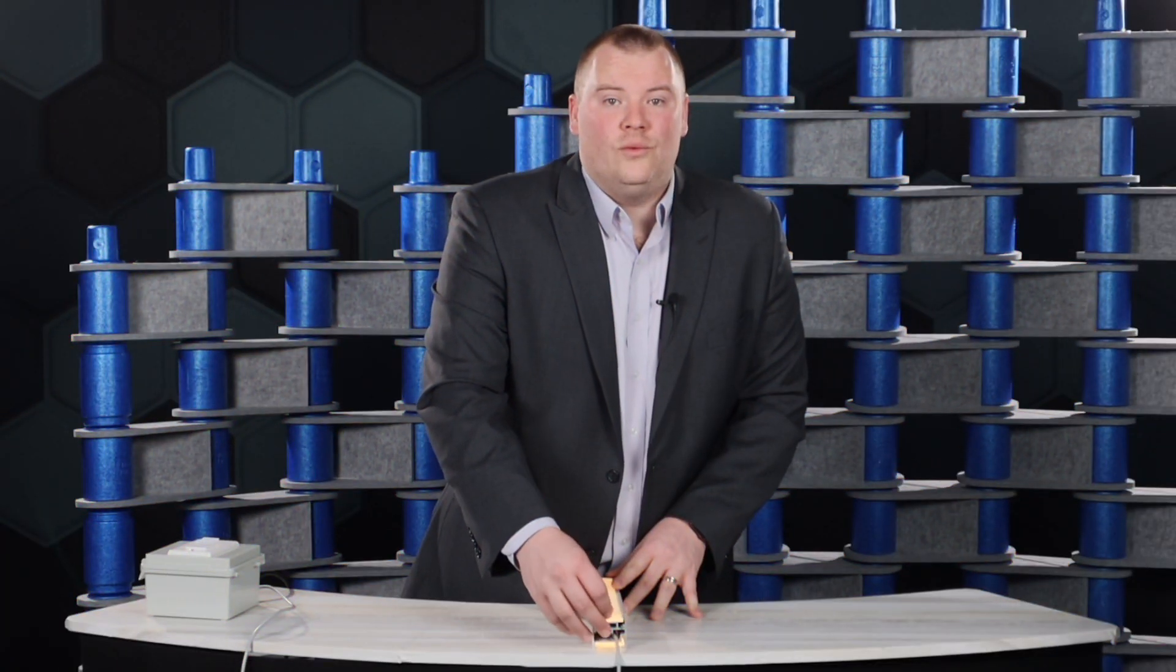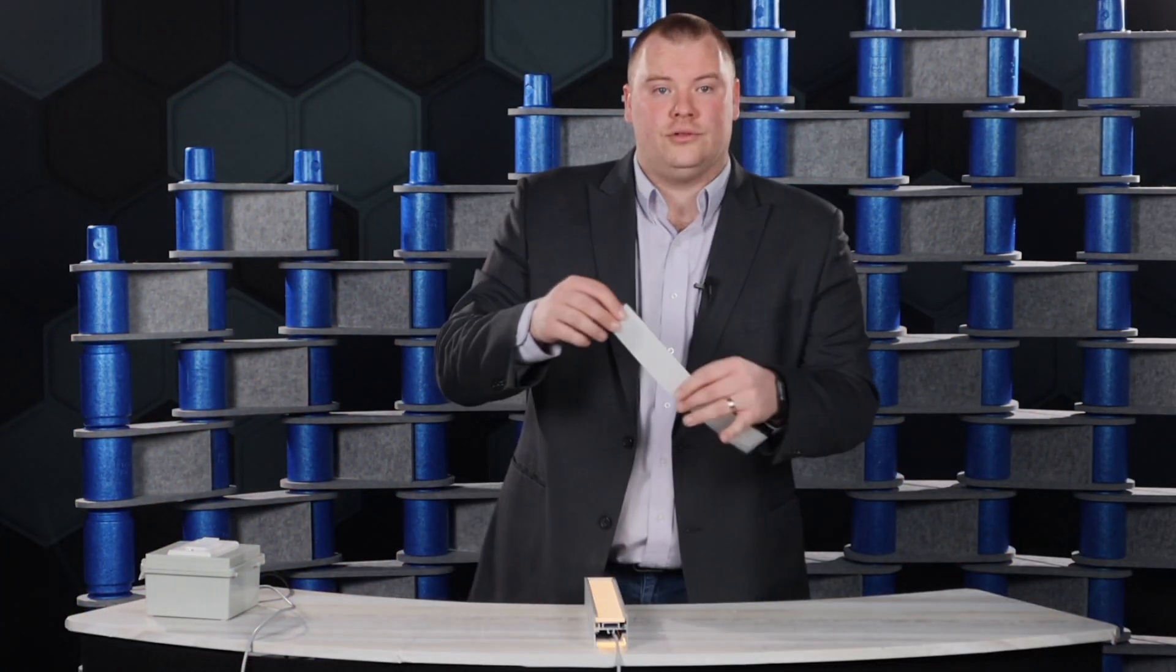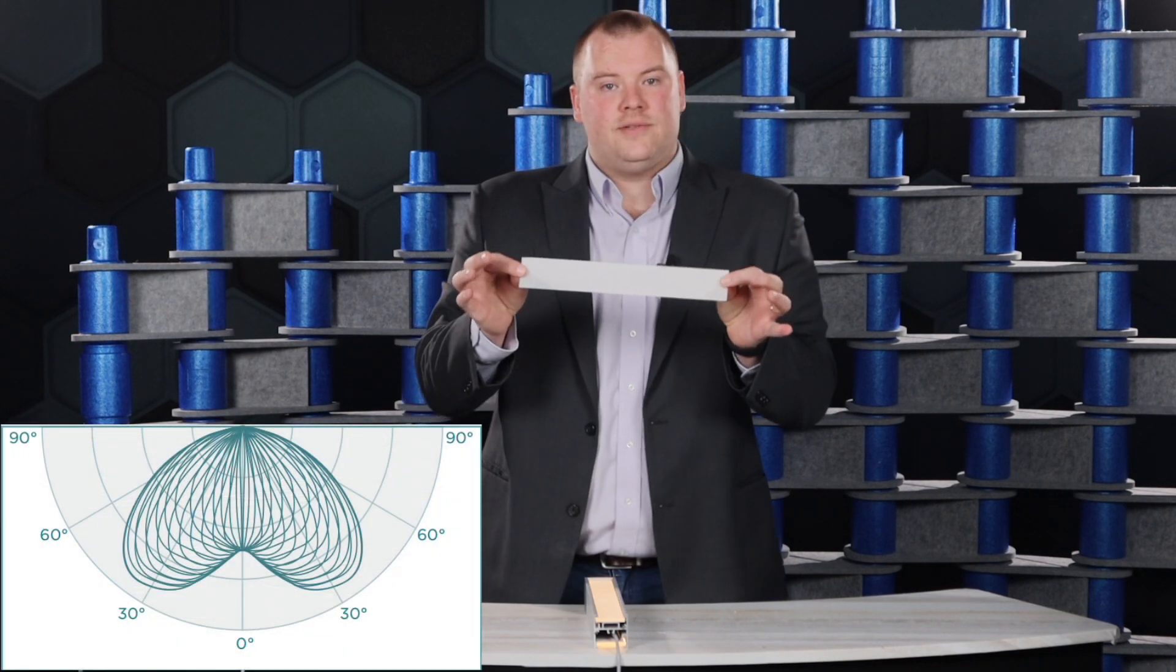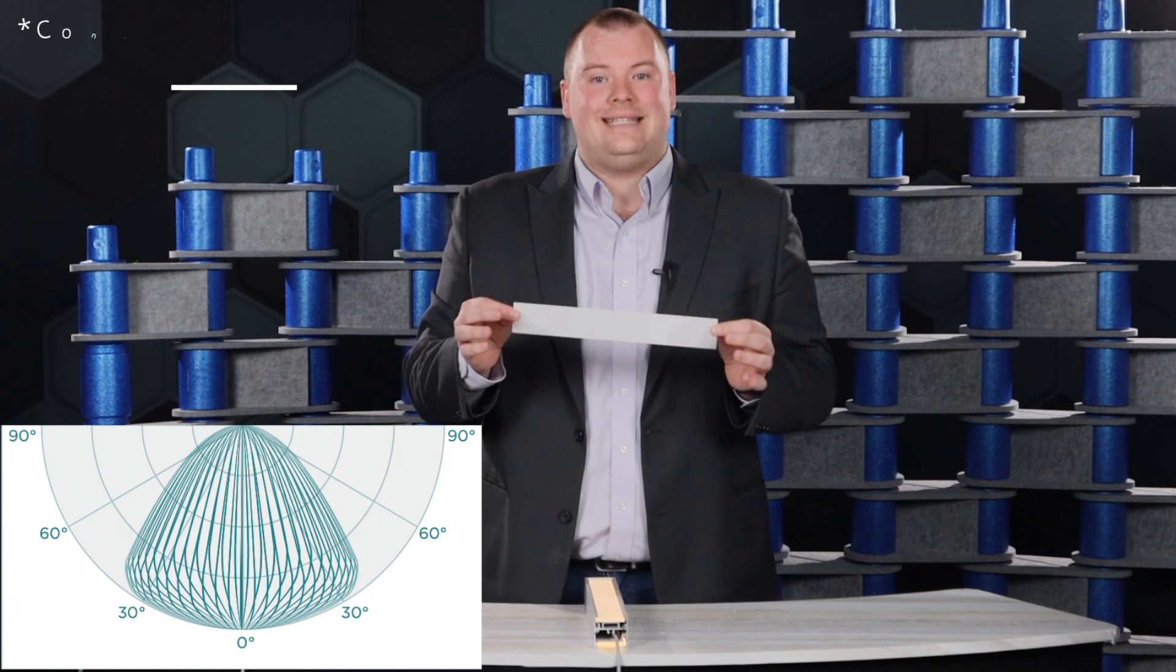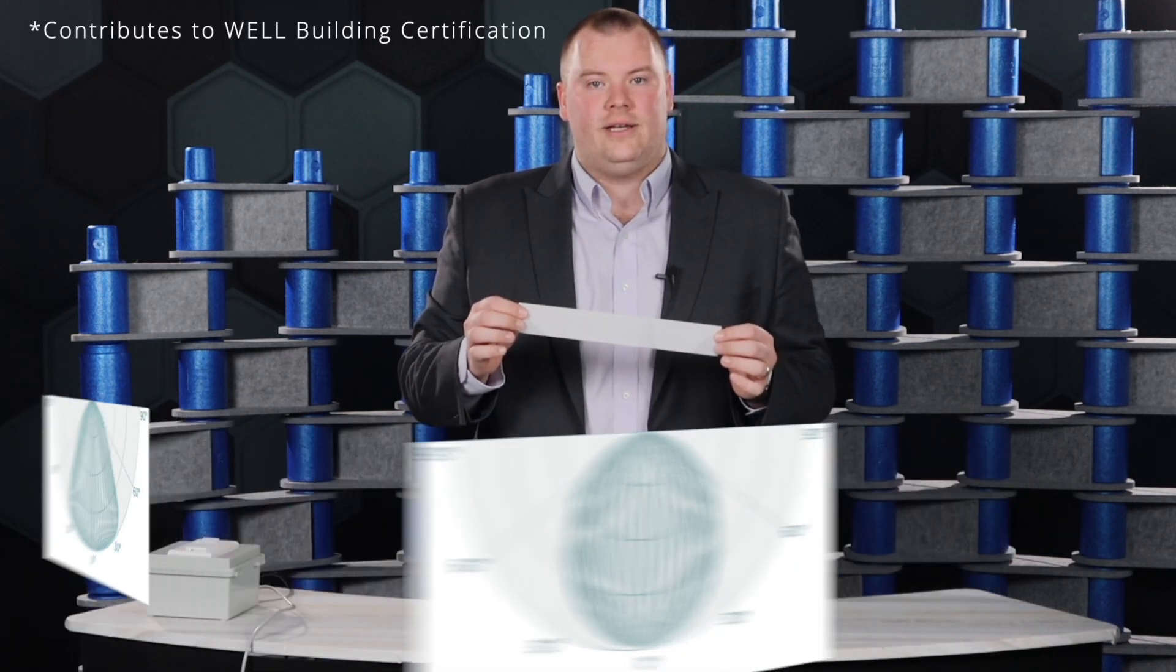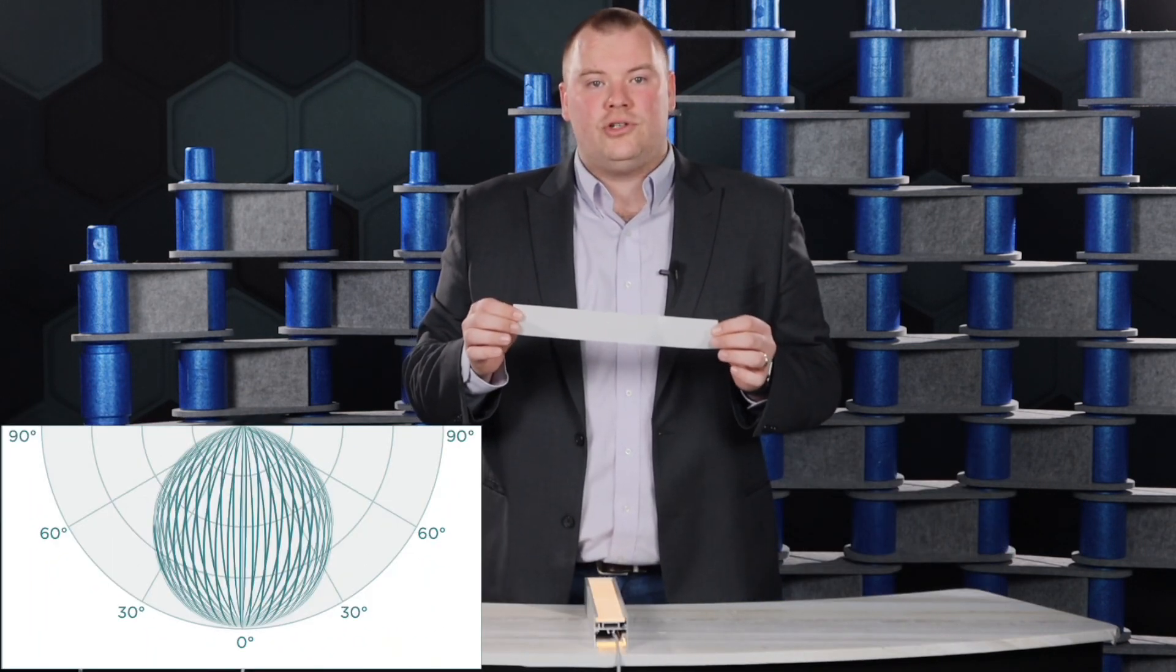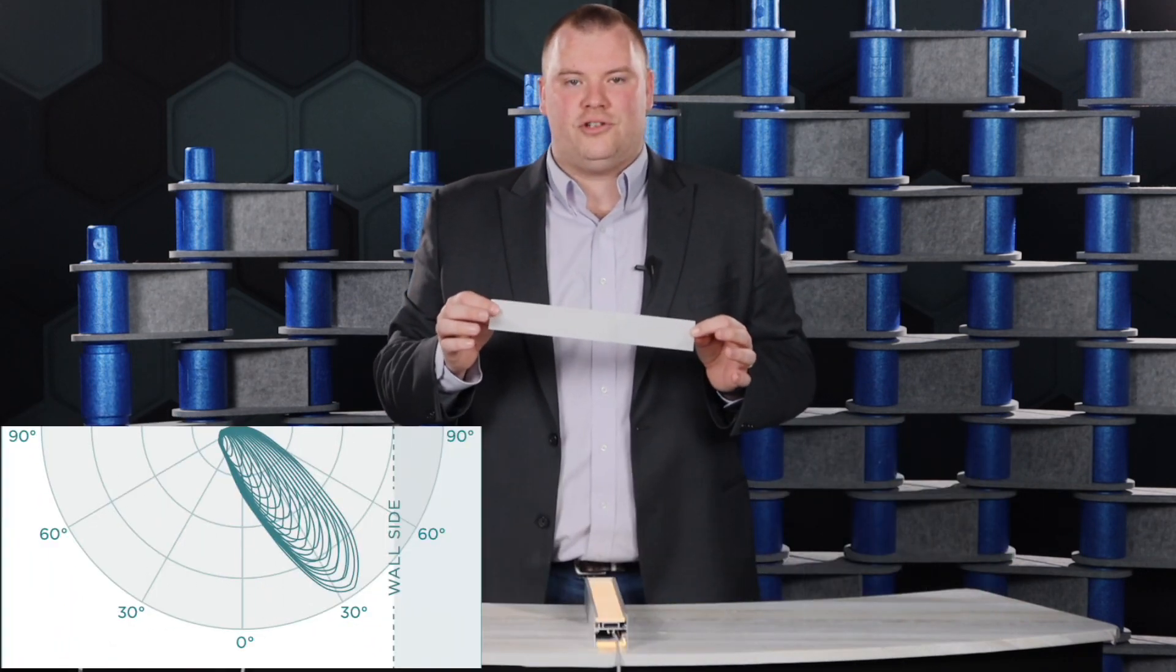This secondary film will allow us to offer you four different optical choices. A batwing, which gives us a 4 to 16 foot spacing. A glare control optic, which gives us a UGR of under 19, so it is WELL Building certified. They offer standard Lambertian distribution and multiple asymmetric options all out of the same fixture body.